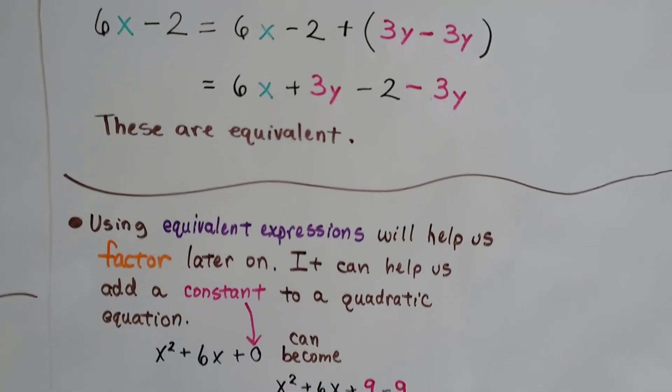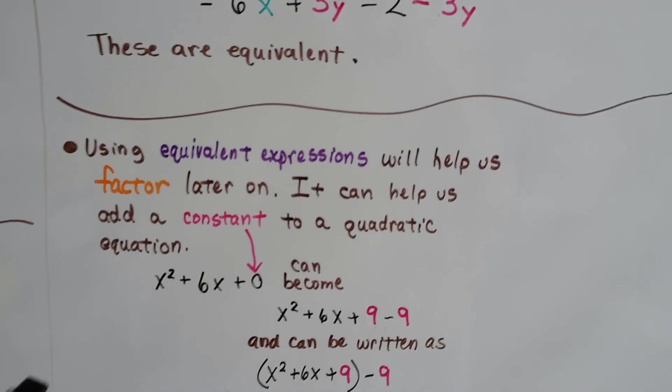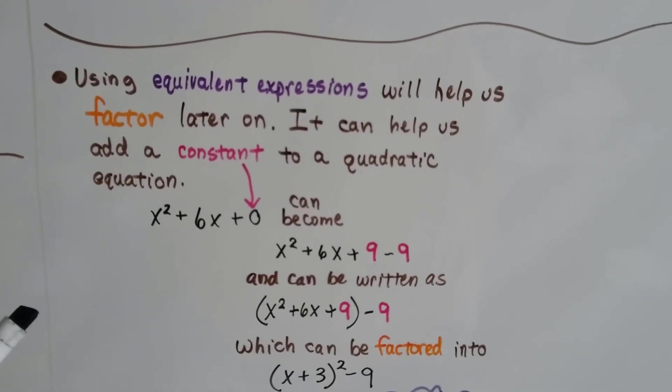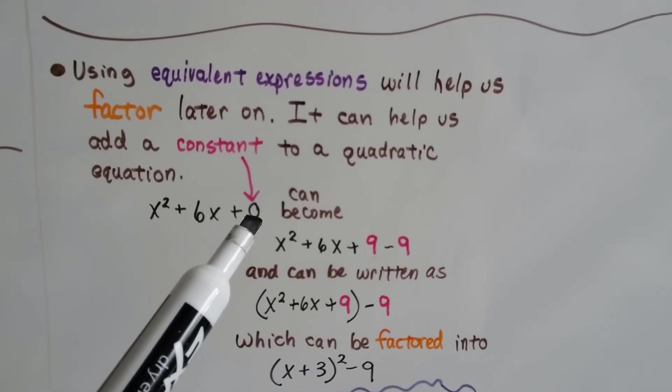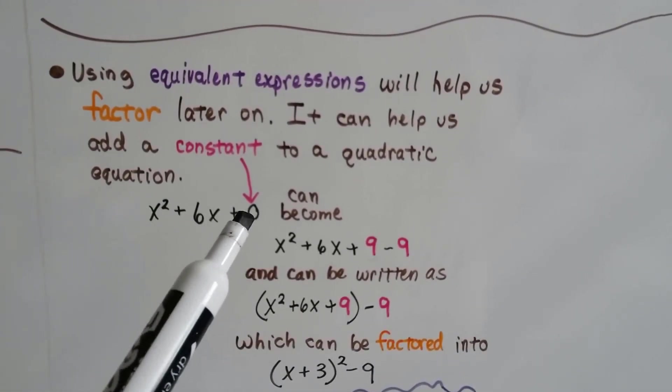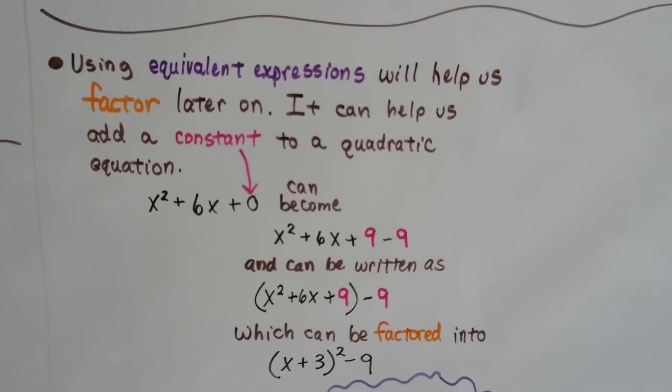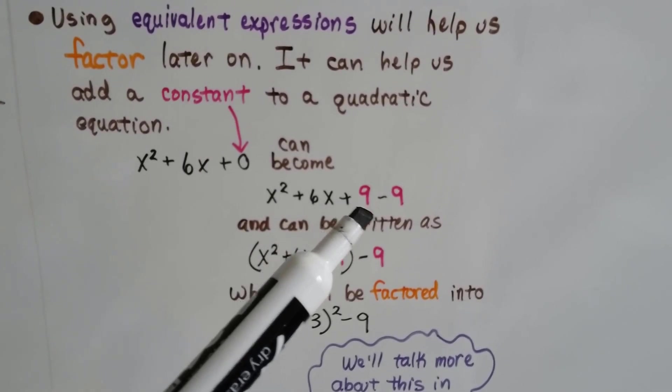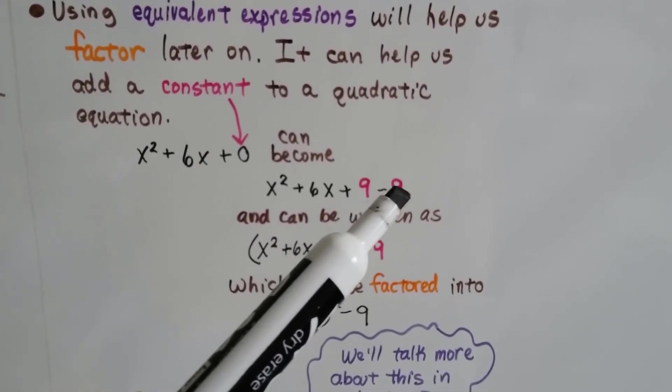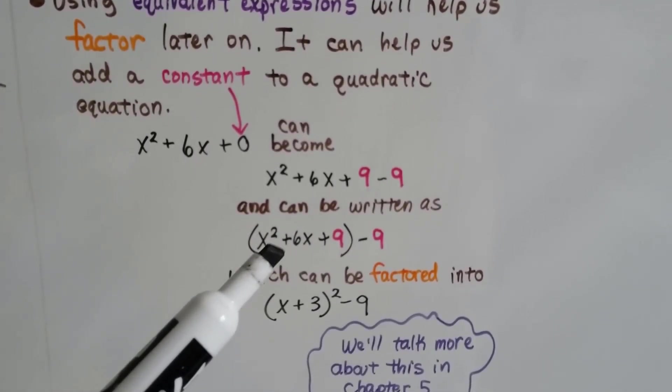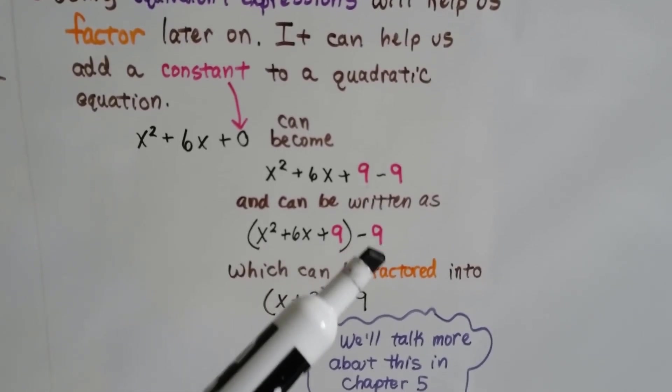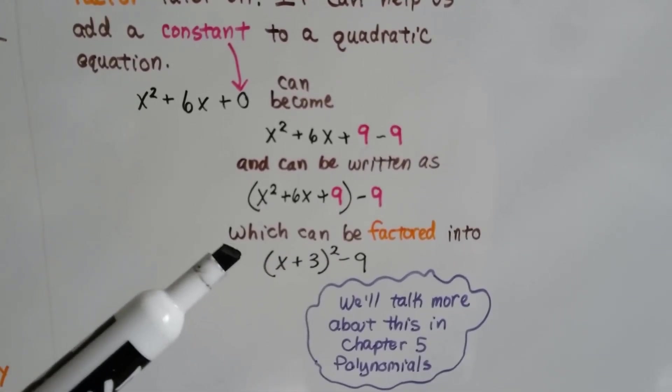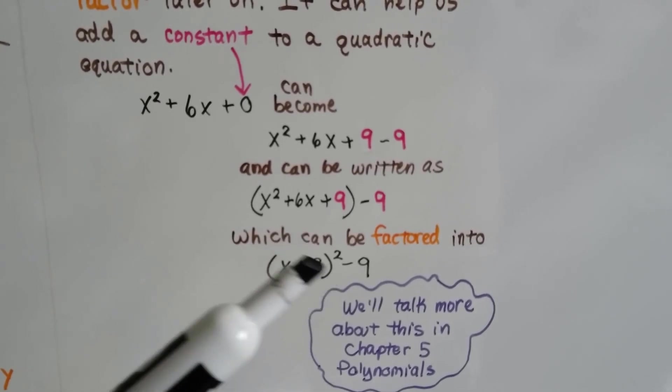In fact, using these equivalent expressions are going to help us factor later on. It can help us add a constant to a quadratic equation. If we added something like 9 minus 9, which equals 0, it could be rewritten as x squared plus 6x plus 9 minus 9. And that could be factored to x plus 3 squared minus 9.